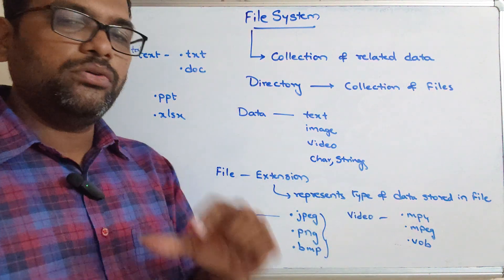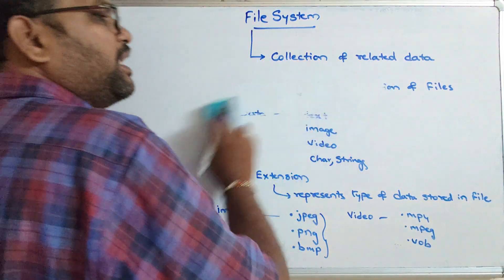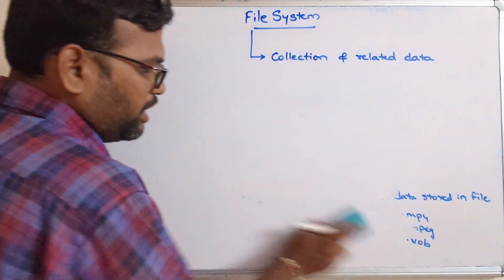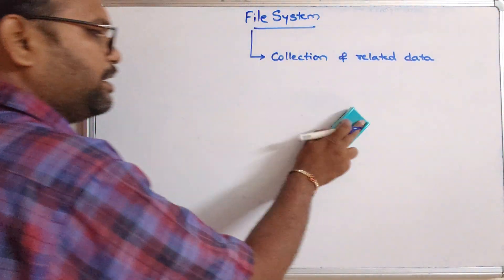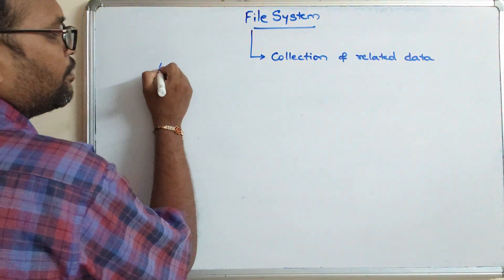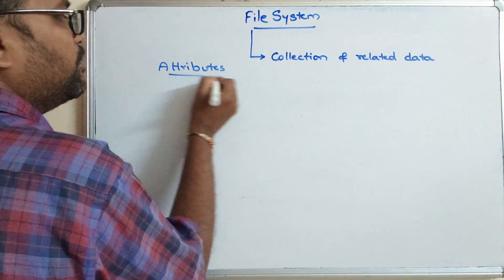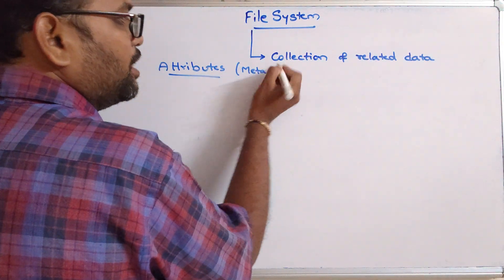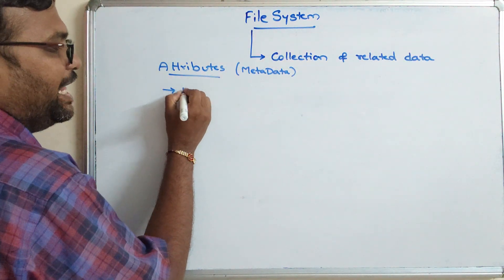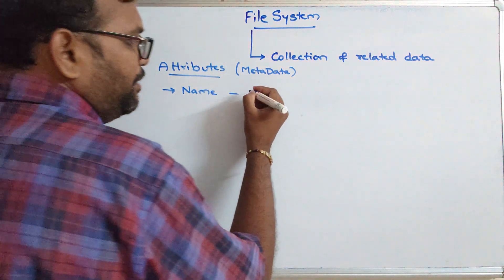Without opening a file we can know the type of data stored in it. Now, what are the different attributes of a file? Attributes are properties which describe that file — we can also call them metadata, which describes the file.